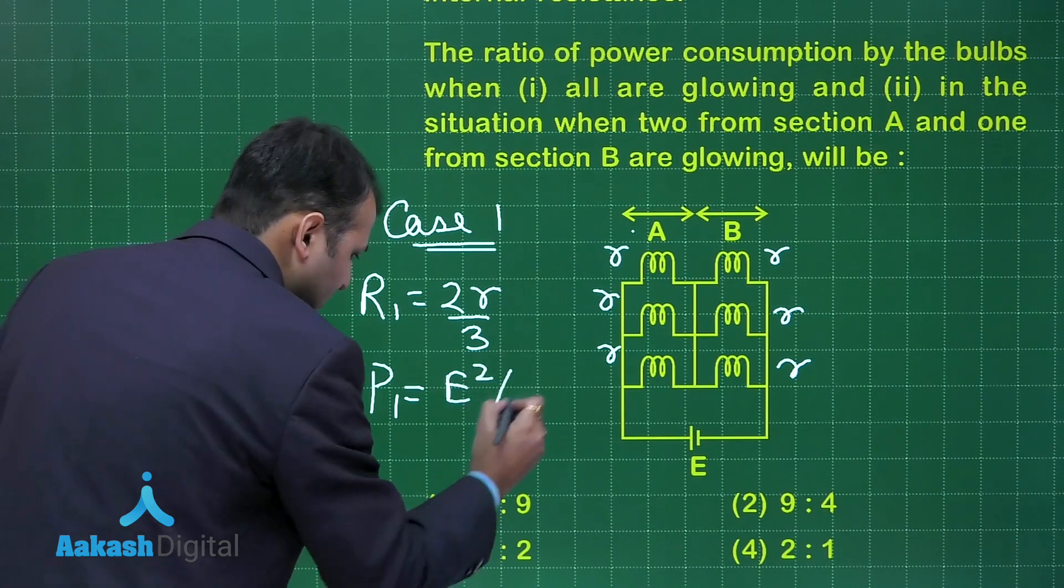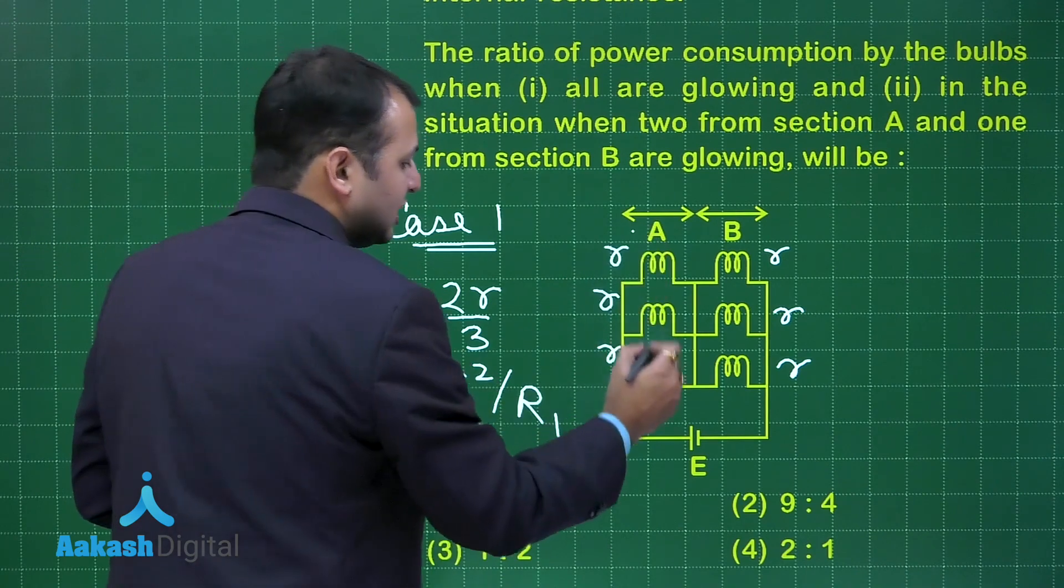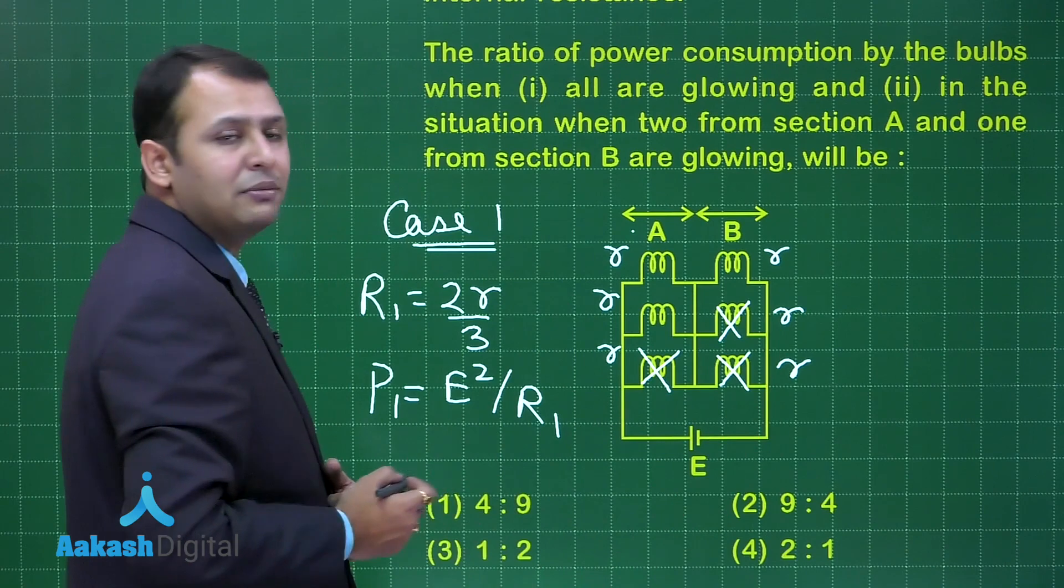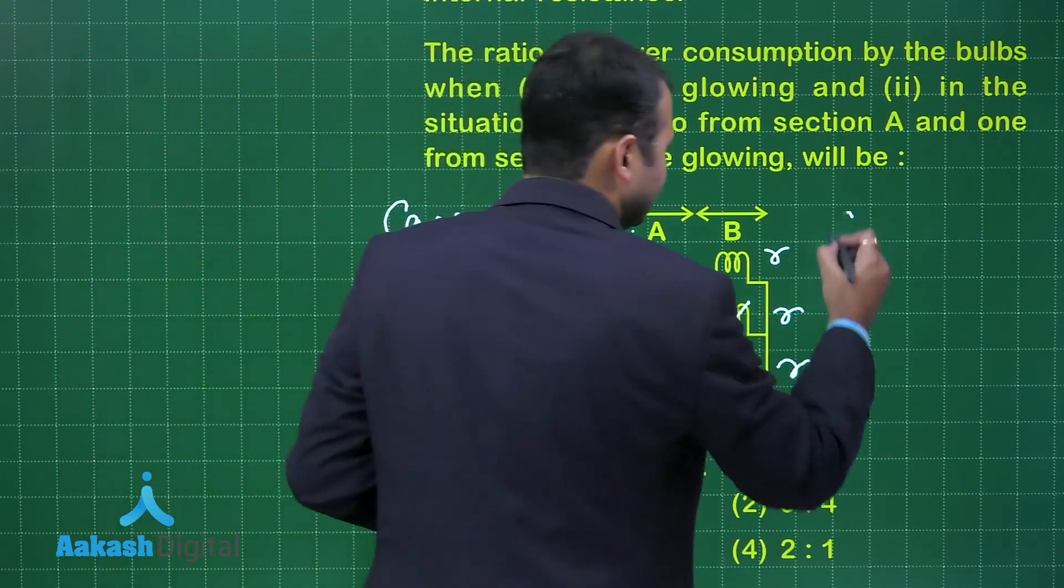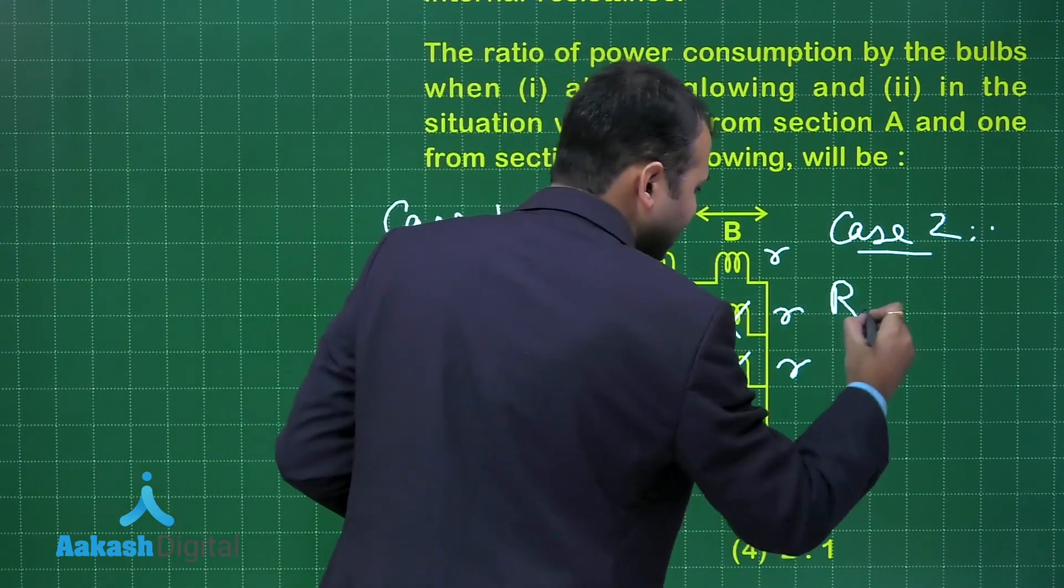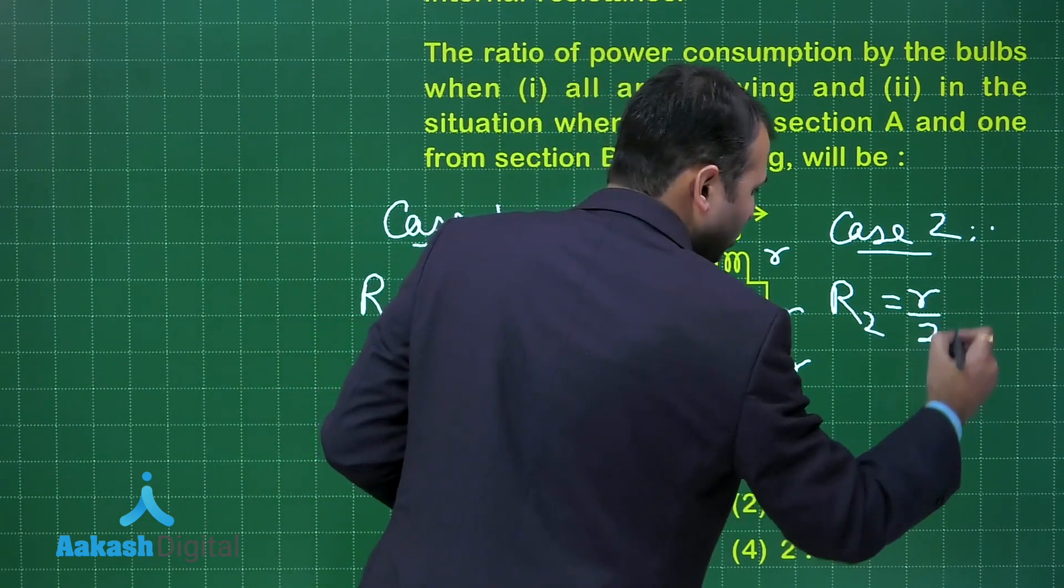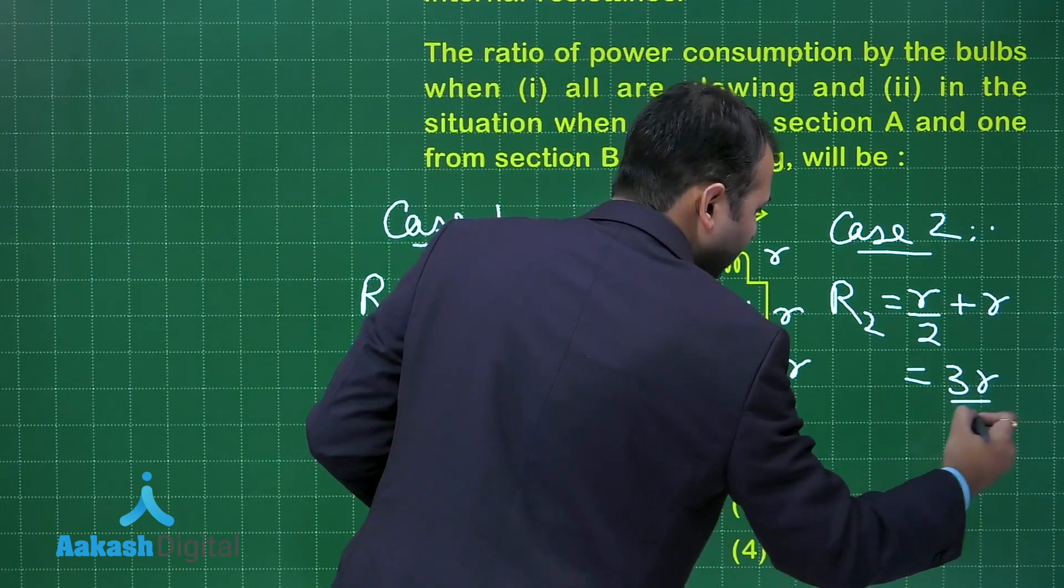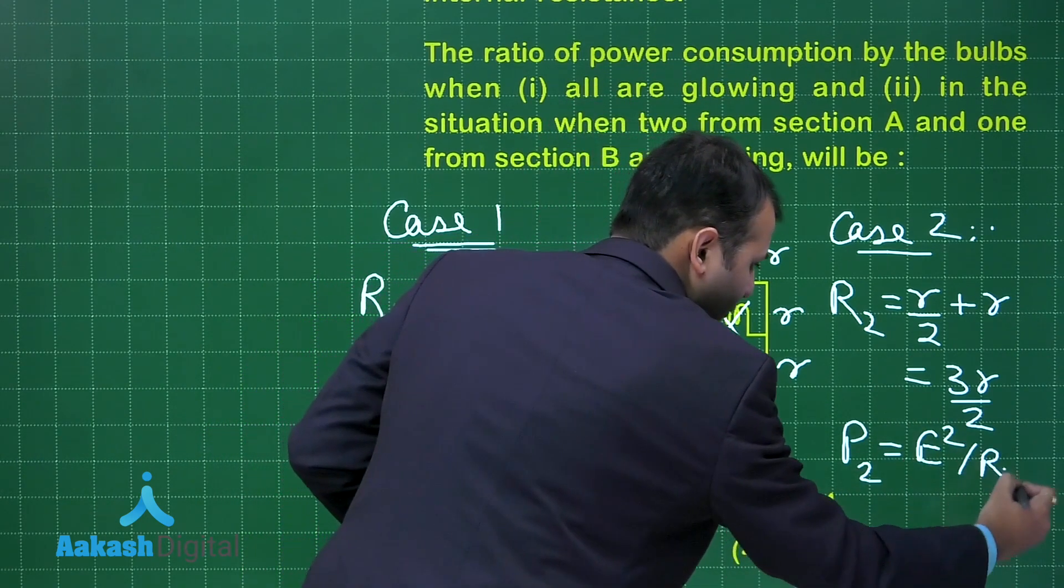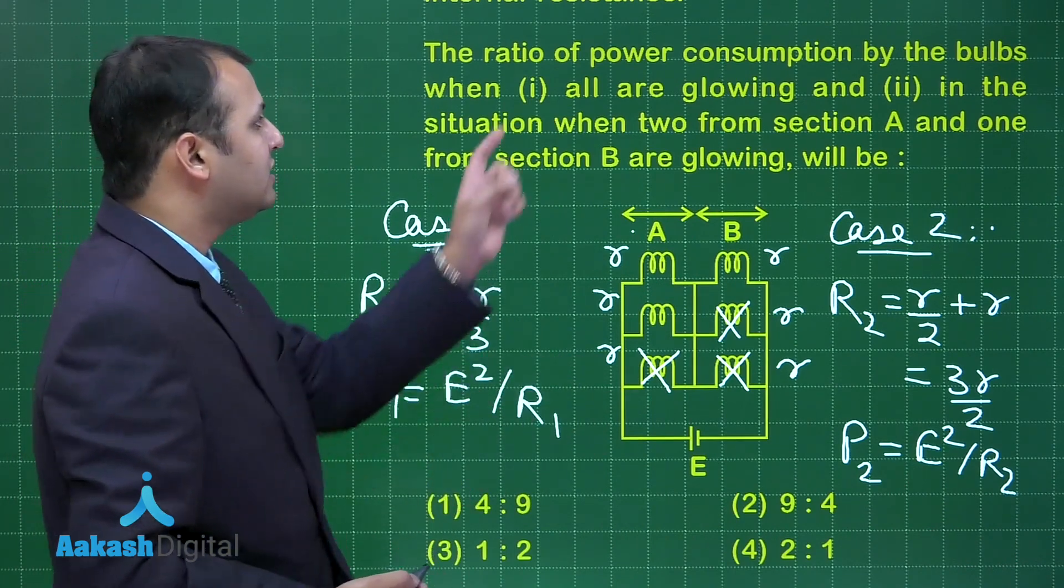Now for the second case, when only two are active in section A, that means this becomes inactive, and one is active in section B, that is these become inactive. Let's take it as case 2. In this case, what will be the net resistance? Only two are left, so R by 2 and this is R. So that is R by 2 plus R, that would be equal to 3R by 2. In this case, what would be the power? It is E square upon R2. Now we have both the powers P1 and P2.